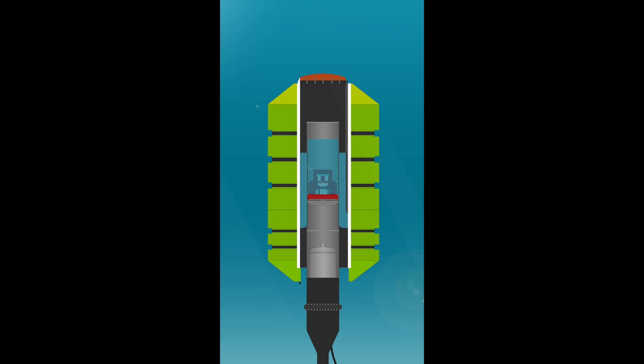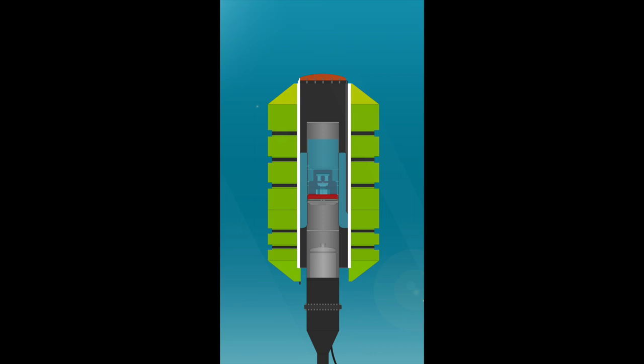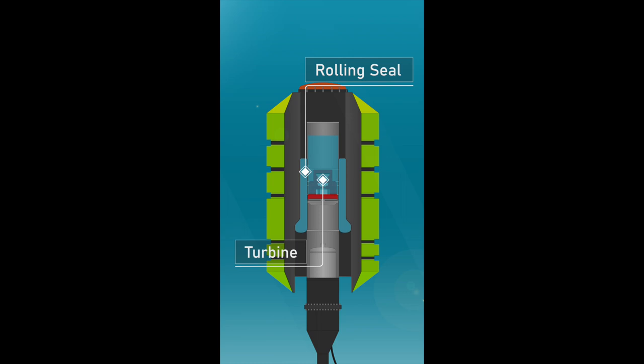Between the core and the hull, a rubber roll seal guides the two parts. The roll seal acts as a pump and pushes the internal liquid through a turbine into a spring chamber.